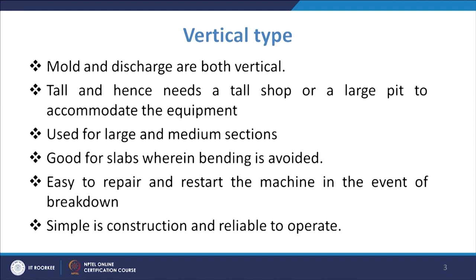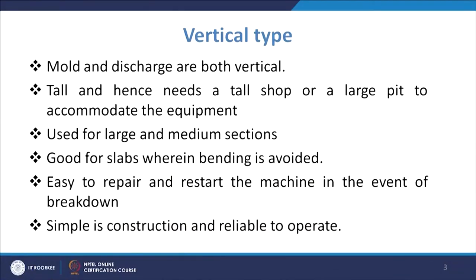In many cases when we go for other designs of the caster there is bending, but wherever bending is to be avoided we use this vertical type because the product is coming vertically down. It is normally used for large and medium sections because bending is very difficult for large and heavy sections. So for large sections, these vertical type machines are preferred, and you have a roller arrangement below the mould region.